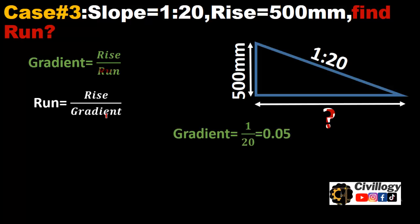And putting the values—as gradient is equal to 1 divided by 20, 1 in 20 means y divided by x, which is equal to 0.05—so rise is 500 and the gradient is 0.05. We will get the run is equal to 10,000 millimeters. So this is the simple formula to calculate slope in different forms.